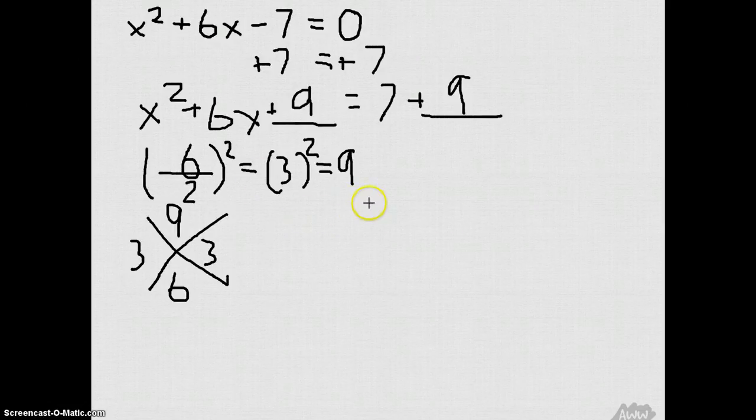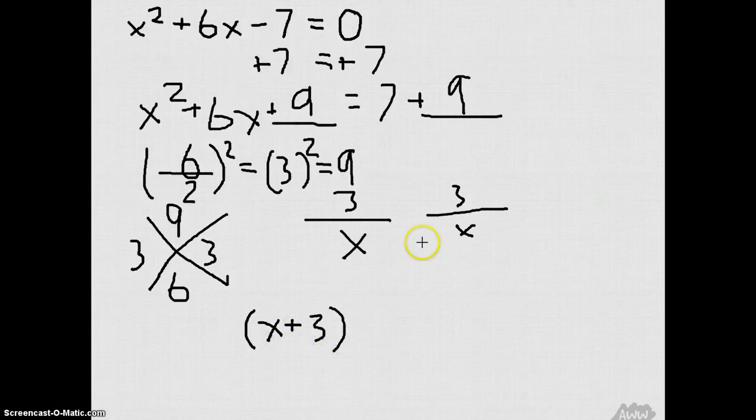So now that we got that, it's gonna be 3 and 3. And now we go down and it's x plus 3. And since they're the same, it's gonna be (x + 3) squared. Oh, you smart Chris!